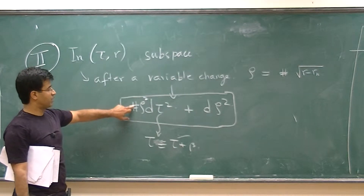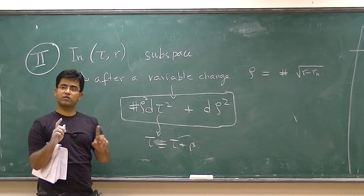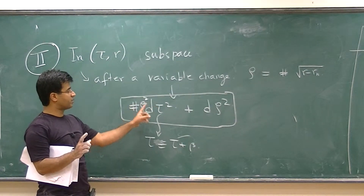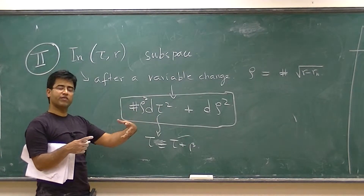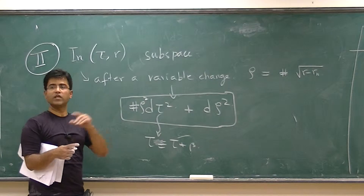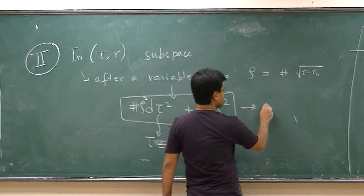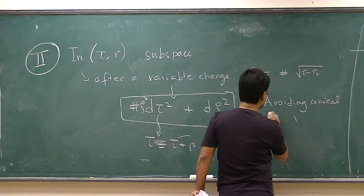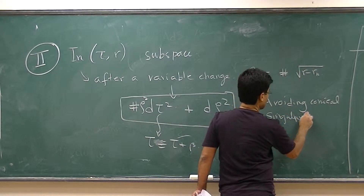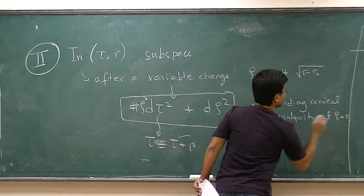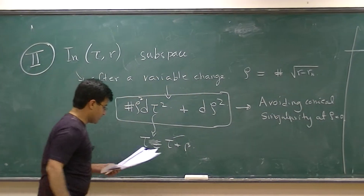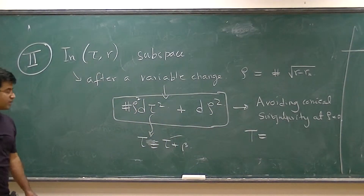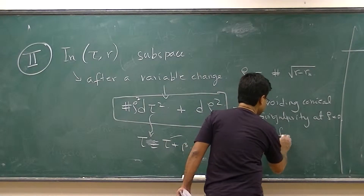Only if this number and the periodicity of this angular direction are such that when you redefine and absorb this number into a redefined angular variable, that new angular variable has period precisely 2 pi. So in order to avoid a conical singularity at the origin, you basically end up with a condition that relates the periodicity of the time direction, which is the temperature, to the horizon size.